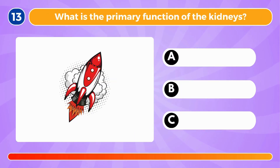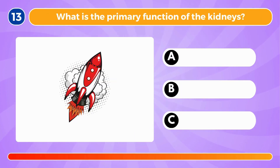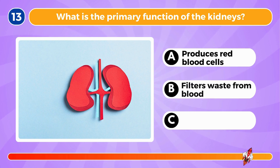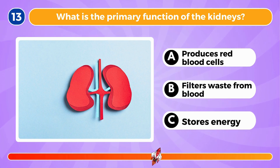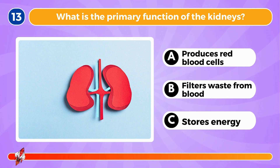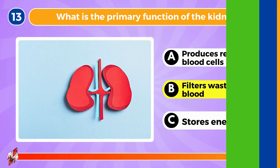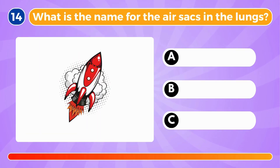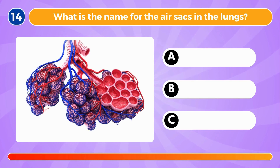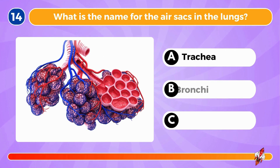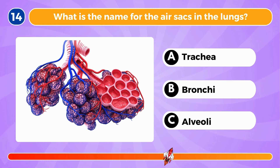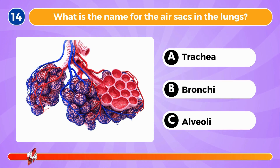What is the primary function of the kidneys? It filters waste from blood. What is the name for the air sacs in the lungs? They're called alveoli.